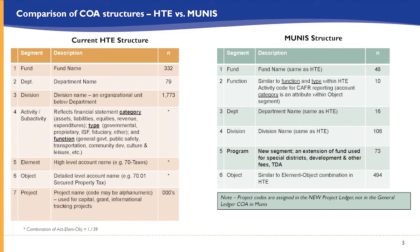In the new chart of accounts with Munis there will be six segments instead of seven, though some are very similar. We will obviously have fund as the first segment; however, we are making a substantial reduction in the number of funds — from 332 (or 175 or so active funds) down to 48 funds. We're really trying to limit funds to only those actually required for legal, regulatory, or generally accepted accounting principles purposes.